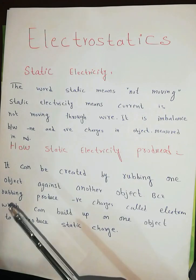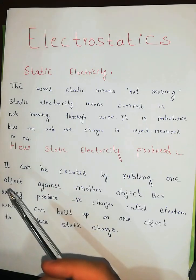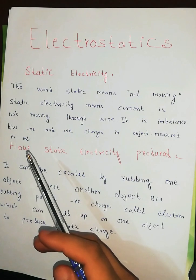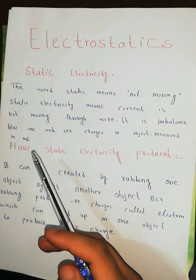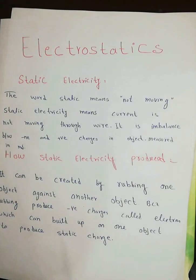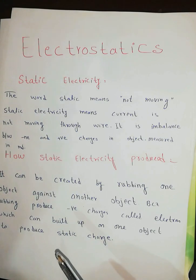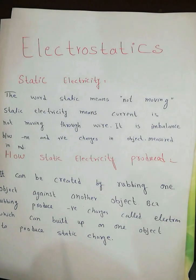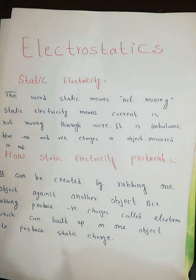We measure static electricity in millijoules. How is static electricity produced? It is produced by rubbing one object against another.